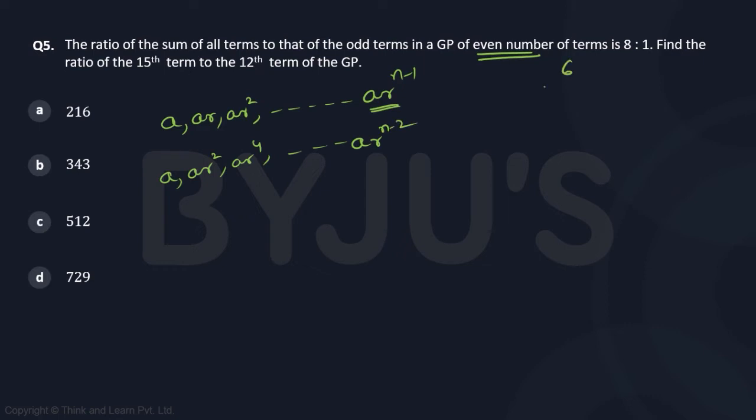Because if there are six terms—1, 2, 3, 4, 5, 6—the last is always even. If there are eight terms, again, the eighth is the last term. So that is the even term, and the odd term will be the term before that: ar^(n-2).